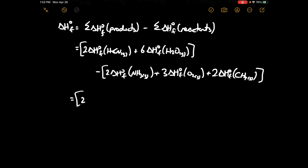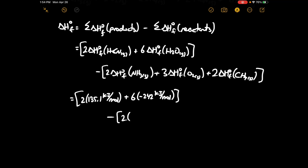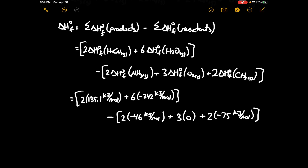Delta H°f of HCN gas is positive 135.1 kJ/mol. Delta H°f of H₂O gas is negative 242 kJ/mol. Delta H°f of NH₃ gas is negative 46 kJ/mol. Delta H°f of O₂ is zero, and delta H°f of CH₄ is negative 75.1 kJ/mol. This works out to a value of negative 939.8 kJ/mol, which is the delta H°f for Part A.